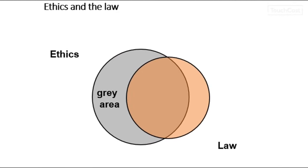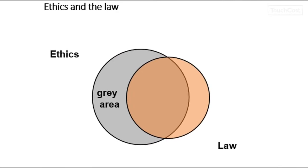Having defined business ethics in terms of issues of right and wrong, one might quite naturally question whether this is in any way distinct from the law. Surely the law is also about issues of right and wrong. There is considerable overlap between ethics and the law. In fact the law essentially provides codes of ethics into specific social rules and regulations. The law might be said to be the definition of the minimum acceptable standards of behavior. However, the law does not clearly cover every possible ethical issue in business or outside of business.